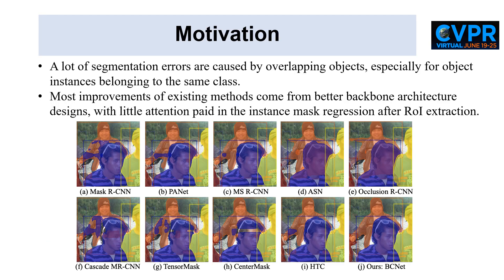Mask RCNN and its variants have demonstrated notable performance. However, we note that most incremental improvement comes from better backbone architecture designs, with little attention paid to the instance mask regression after obtaining the ROI features from object detection. We observe that a lot of segmentation errors are caused by overlapping objects, especially for object instances belonging to the same class.